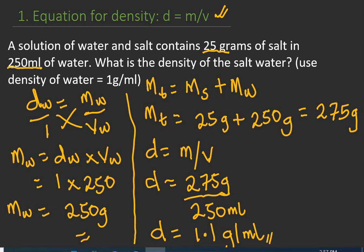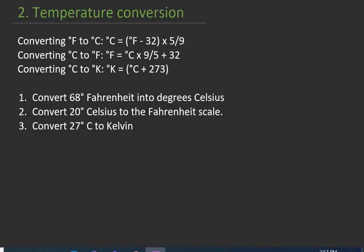Take note of this: the salt water has a density of 1.1 grams per milliliter. Whenever you come across a question like this, this is what I expect you to do. Now the next formula we'll be looking at is formulas for temperature conversion — converting from Fahrenheit to Celsius, Celsius to Fahrenheit, and Celsius to Kelvin. You need this especially for questions on gas laws.